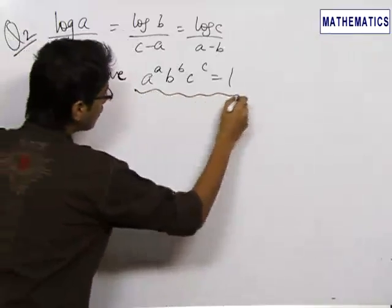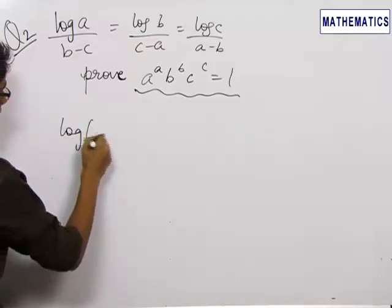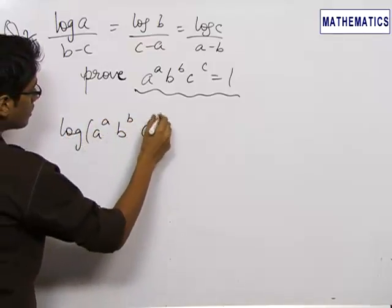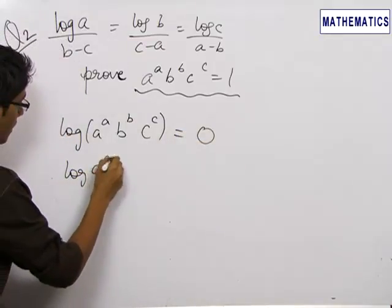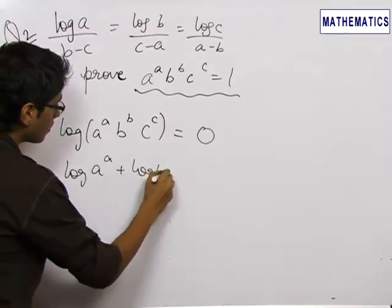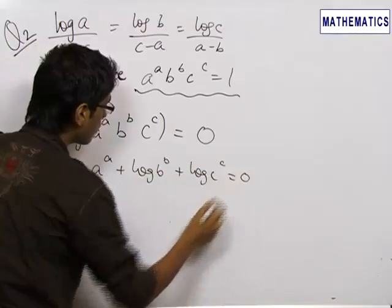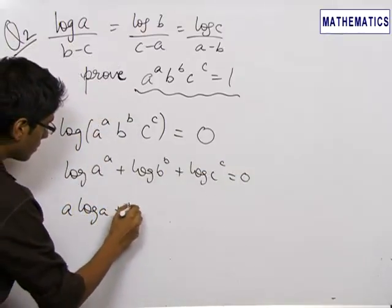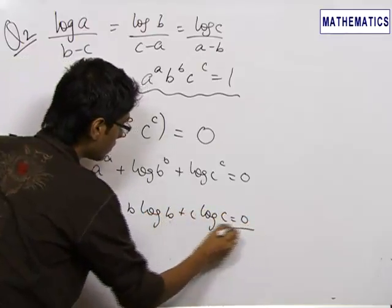Now, we try to convert this. We take log both sides. Log of a^a times b^b times c^c equals 0. This becomes log a^a plus log b^b plus log c^c equals 0, which makes it as a log a plus b log b plus c log c equals 0.